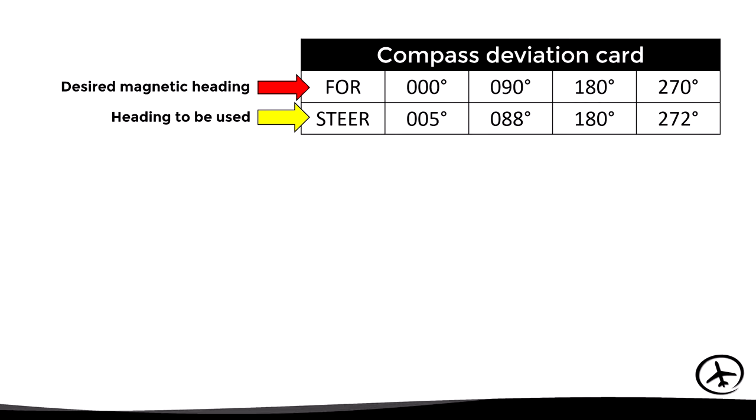Looking at the card in more detail: in the upper row is the desired magnetic heading, and in the lower row the corrected heading to set on the compass. The upper part gives the heading relative to actual magnetic north, while the lower part gives the heading relative to compass north. For example, to fly a north heading of zero degrees, we must fly with the compass indicating 005 — a deviation of plus five degrees. For heading 090, the compass indication is 088, a deviation of minus two degrees. For heading 180, deviation is zero, and for 270, deviation is plus two degrees.